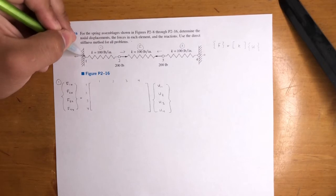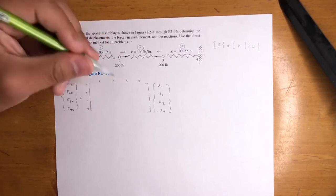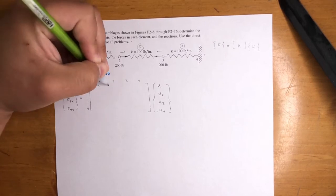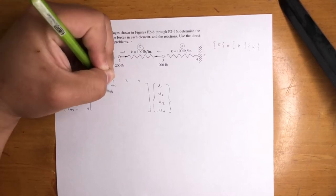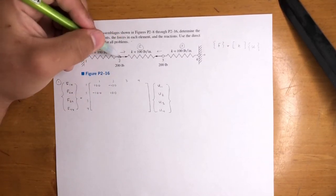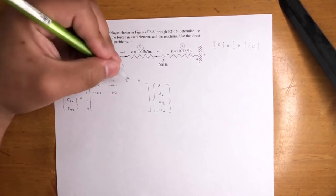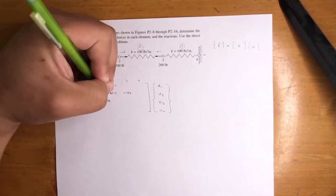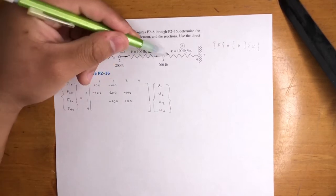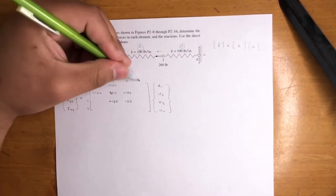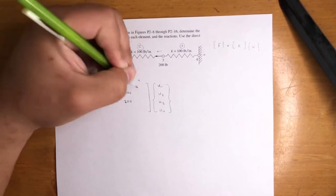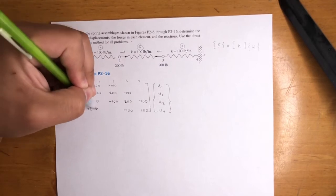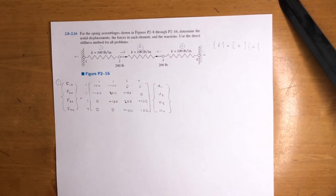Element 1 is between nodes 1 and 2, so we place values at positions 1,1 — 1,2 — 2,1 — 2,2: that's 100, negative 100, negative 100, and 100. Element 2 is between nodes 2 and 3, so we add 100 to positions 2,2 — 2,3 — 3,2 — 3,3. Position 2,2 becomes 200 (100 plus 100), and we get negative 100, negative 100, and 100 for the others. Element 3 is between nodes 3 and 4, same process — position 3,3 becomes 200, with negative 100, negative 100, and 100. Fill in zeros where we didn't have anything.